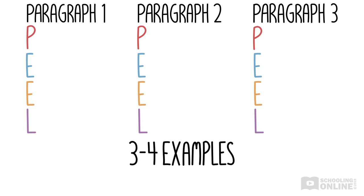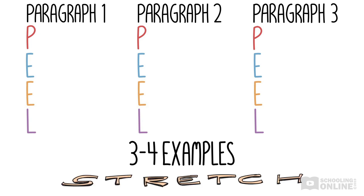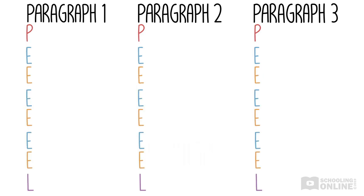How does that work? We stretch out our PEEL structure to add a few more evidence and explanation blocks to support our main point. In other words, your paragraph will look something like this, where each new evidence and explanation block will help you to prove your overarching point for that paragraph.